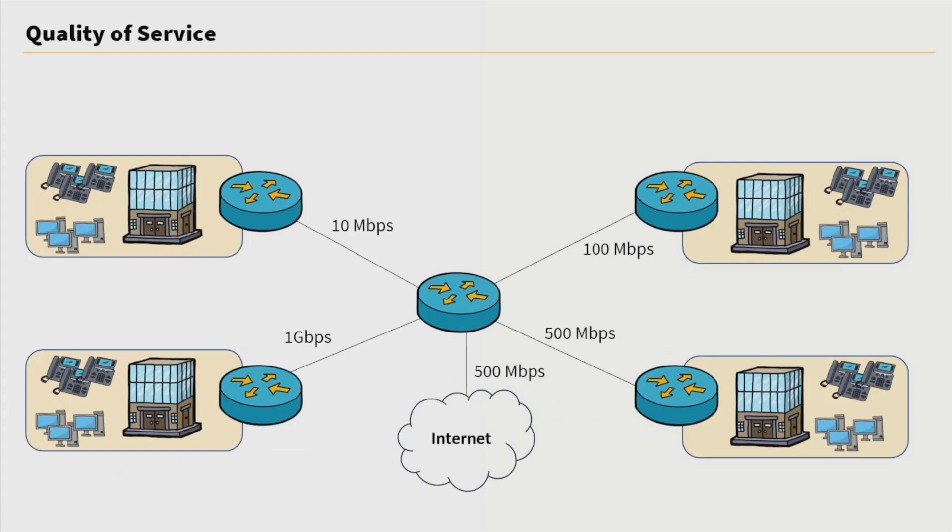Here I have an example of how a topology may look like where we have different speeds for each connection in our network. This link here has a slower bandwidth so therefore it may have a higher chance of experiencing congestion. But we should prepare every site in our network for quality of service for that time that we do experience congestion on our network.